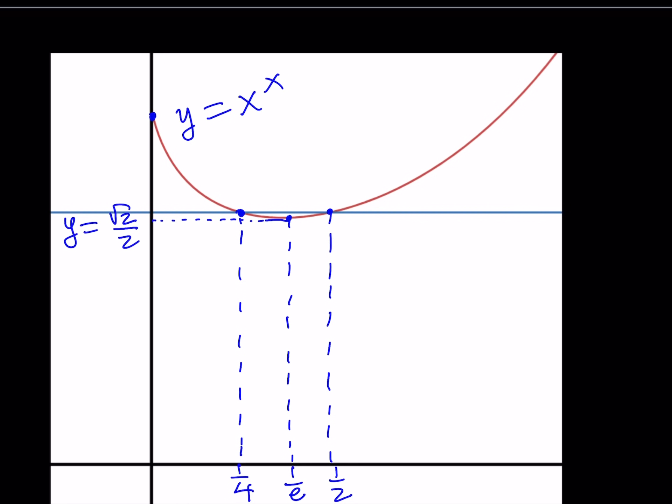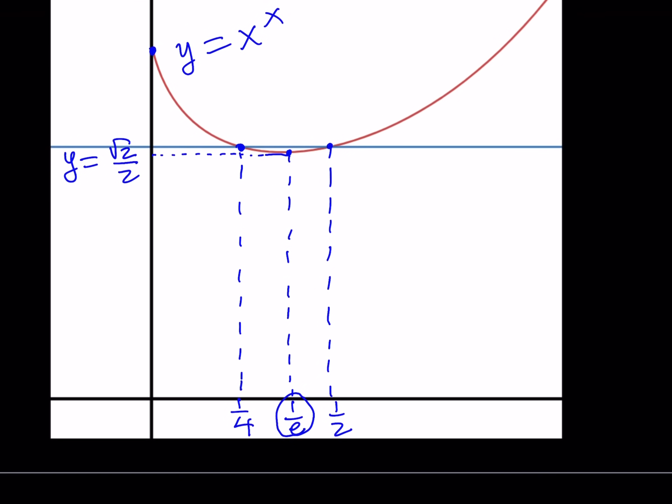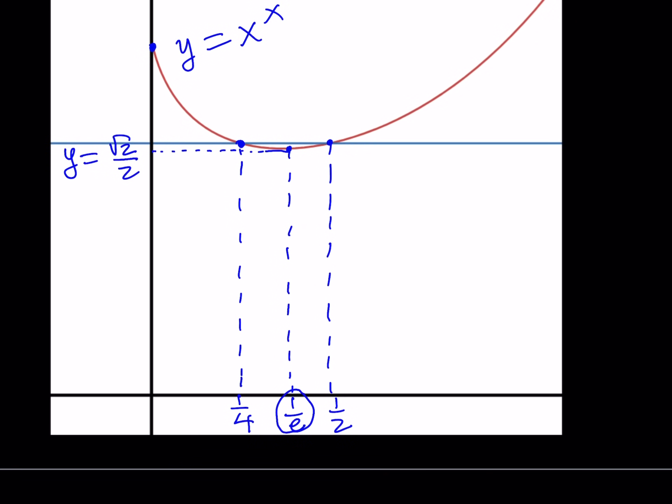So, if you'll evaluate root 2 over 2, it's going to be greater than 1 over e to the power 1 over e. Anyways. To keep a long story short, I just wanted to mention that 1 over e happens to be between 1 fourth and 1 half. Because e is between 2 and 4. If you just take the reciprocals, everything will be reversed. All right?